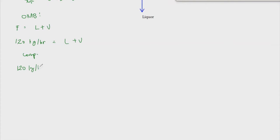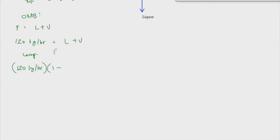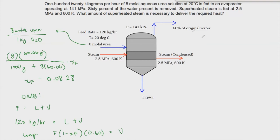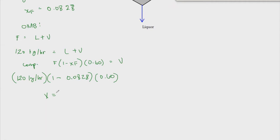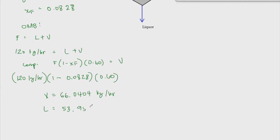For the component balance in terms of water: feed rate of 120 kg/hr times (1 minus x_f) times 0.60 gives the vapor, because 60% of the original water present becomes the vapor. So we have: 120 times (1 minus 0.0828) times 0.60, which gives vapor V equal to 66.0404 kilograms per hour.